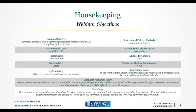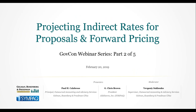As the title of today's webinar implies, today's learning objective is to provide attendees with a better understanding of forecasting DCAA-compliant indirect rates. 1.5 CPE credits are made available to attendees. So, with all that said, welcome to today's webinar — part two of five — projecting indirect rates for proposals and forward pricing.